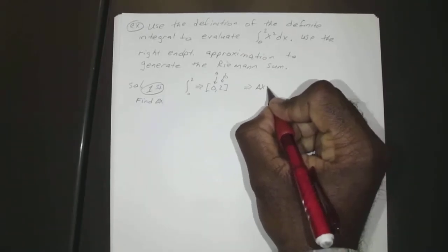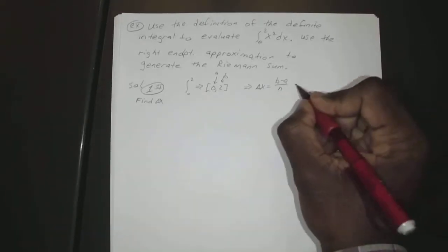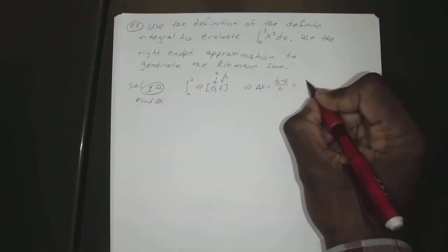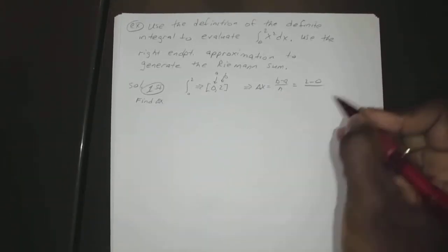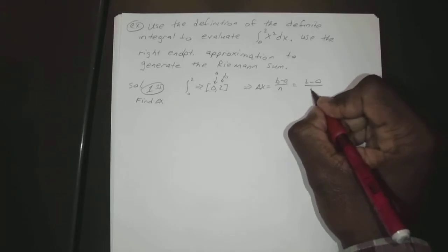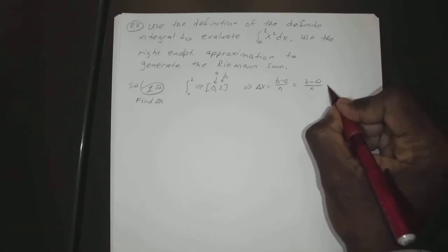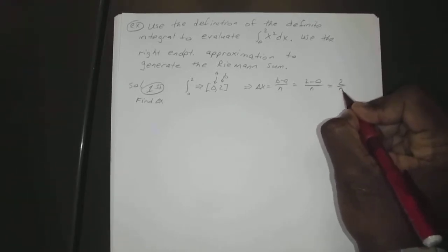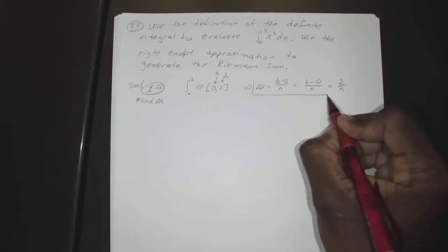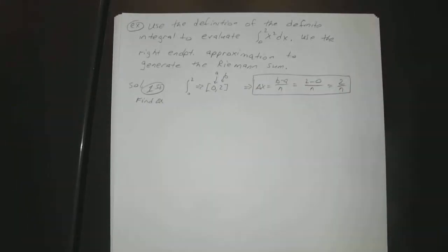For our first step, we're going to find delta x. Delta x is equal to b minus a over n, which is equal to 2 minus 0 over n. They never gave us how many rectangles or intervals, so we just leave that as n — which gives us 2 over n. That's our delta x.